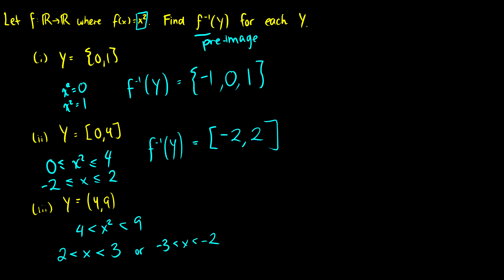So we have these two intervals here. So if we take the pre-image of Y, then we're going to get from -3 to -2 union 2 to 3.